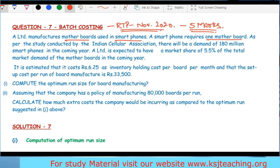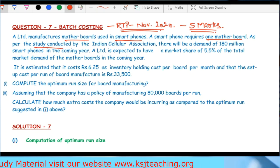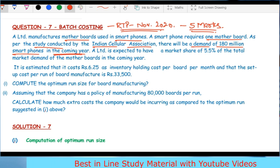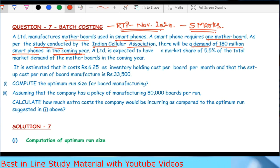Let's see what the question says. A Ltd manufactures motherboards used in smartphones. A smartphone requires one motherboard. As per the study conducted by the Indian Cellular Association, there will be a demand of 180 million smartphones in the coming year.